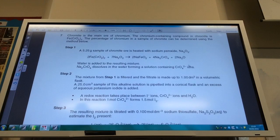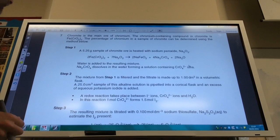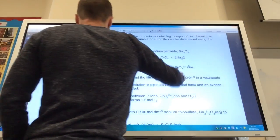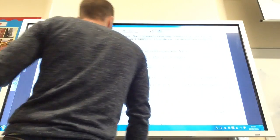We heat it with sodium peroxide and we get that equation. We then add water. Sodium chromite dissolves to form a solution containing chromate ions, rather.